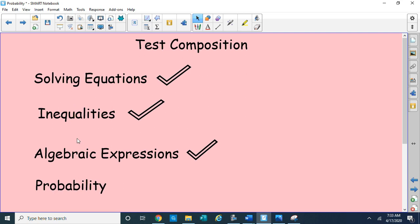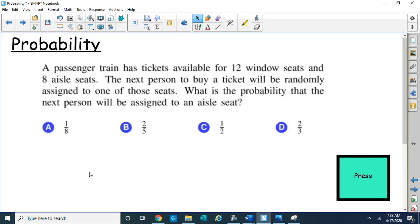Now the last part we're going to cover is probability. Probability is the chances of something happening or not happening. It's a value between 0 and 1. So it can be 0 and it can be 1. It can be a percent, decimal, or fraction as well. So here we have a passenger train has tickets available for 12 window seats and 8 aisle seats. The next person to buy a ticket will be randomly assigned to one of those seats. What is the probability that the next person will be assigned to an aisle seat?